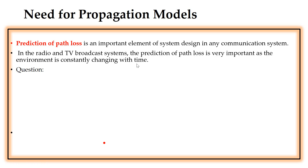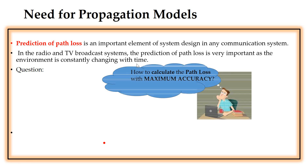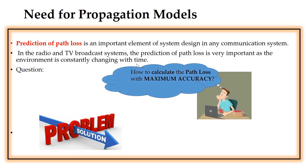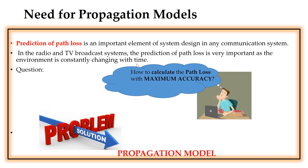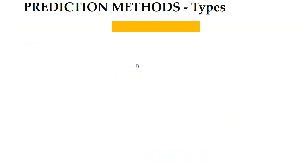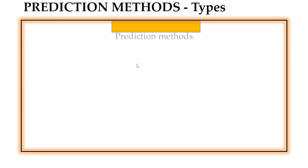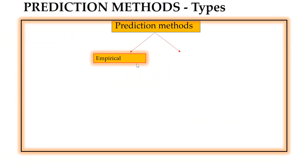A question arises in everyone's mind: how to calculate the path loss with maximum accuracy? A solution to this problem is the propagation model. This propagation model — or rather the prediction method — has been classified into two types: one is the empirical model and the next one is the deterministic model.